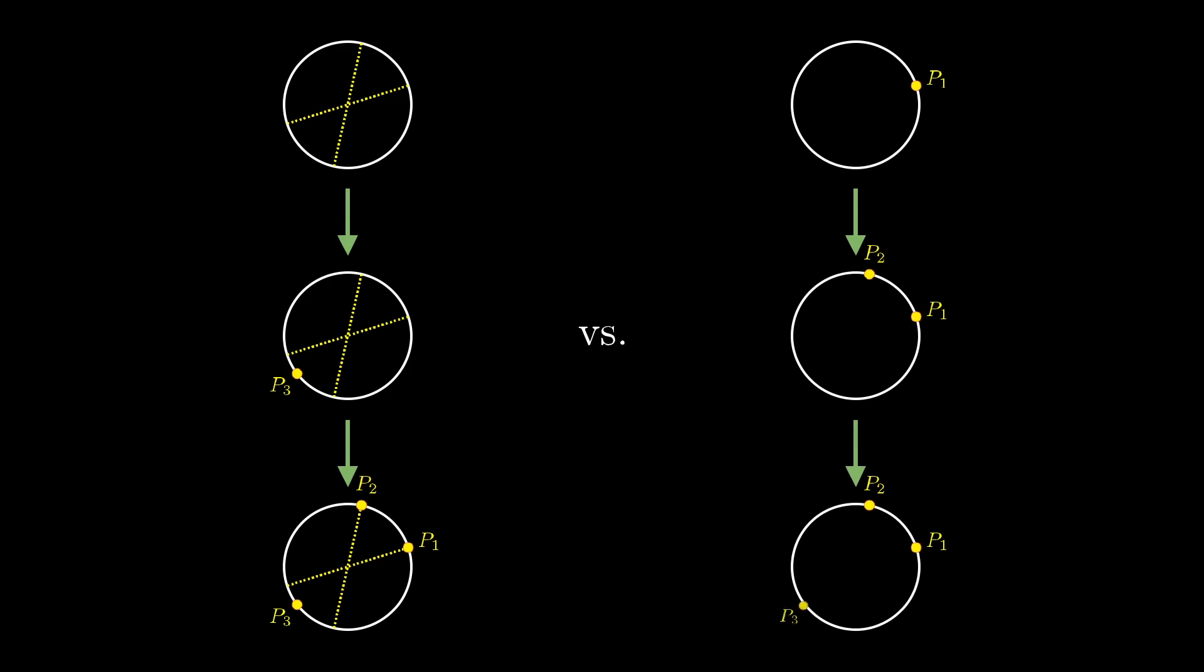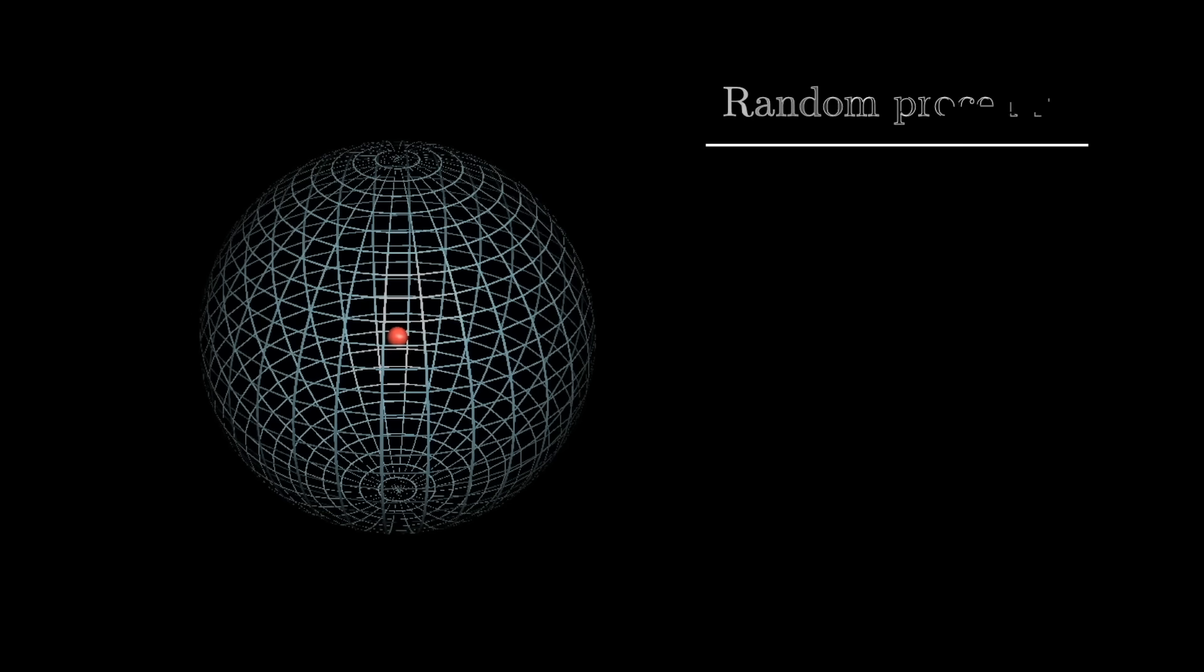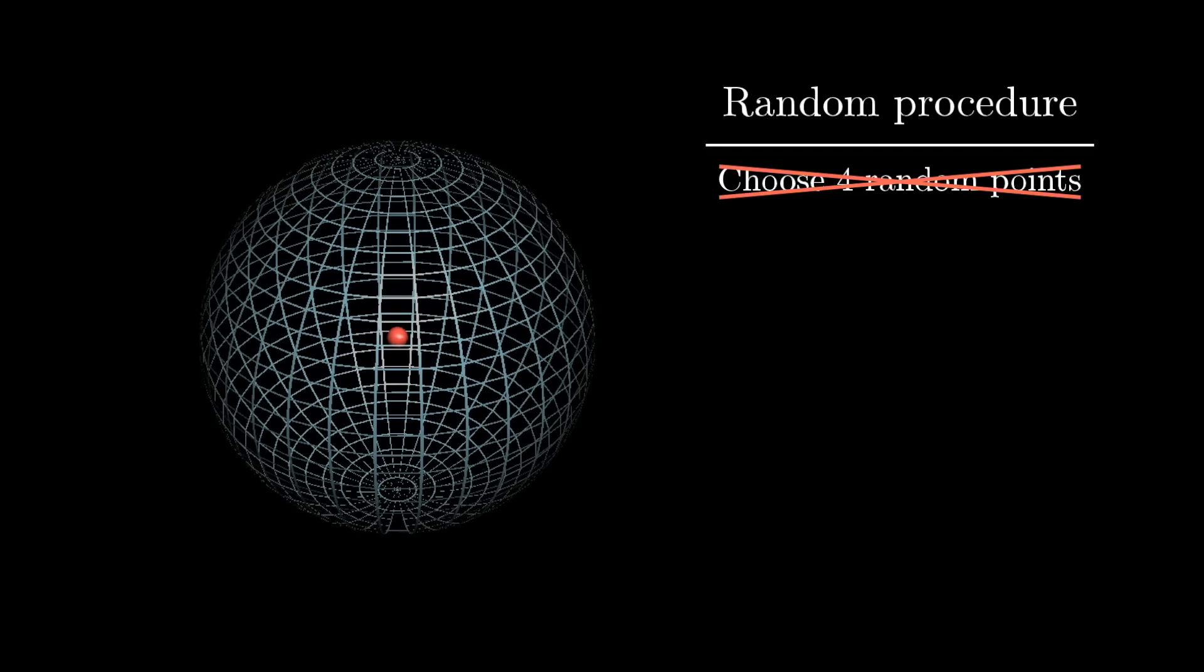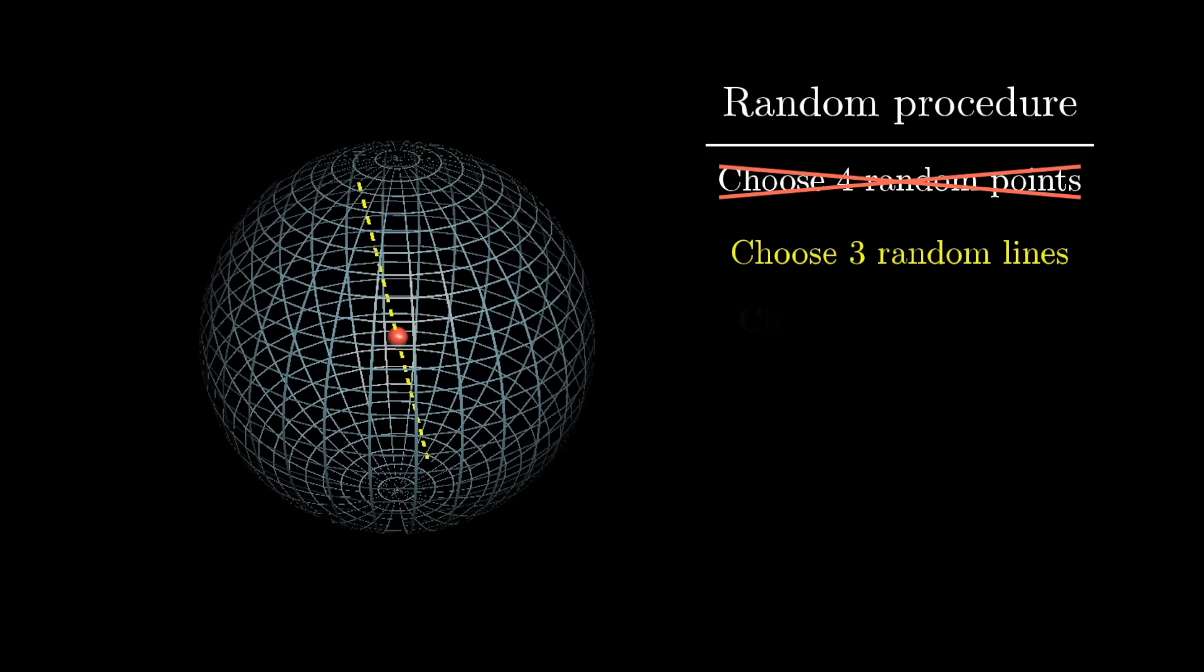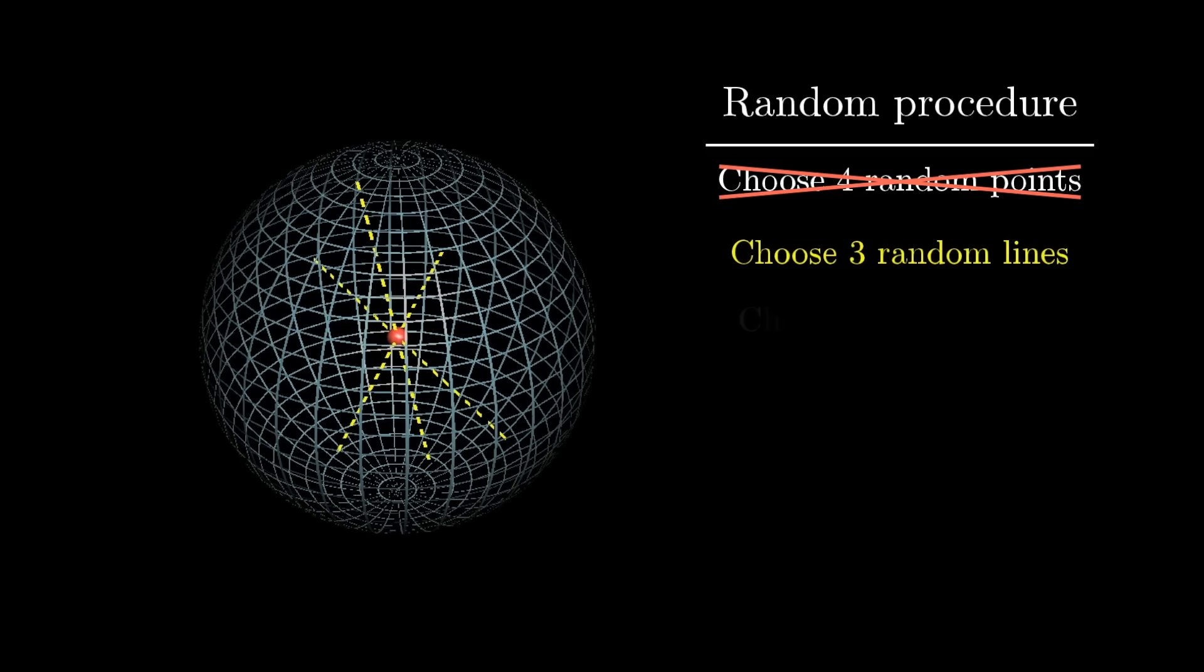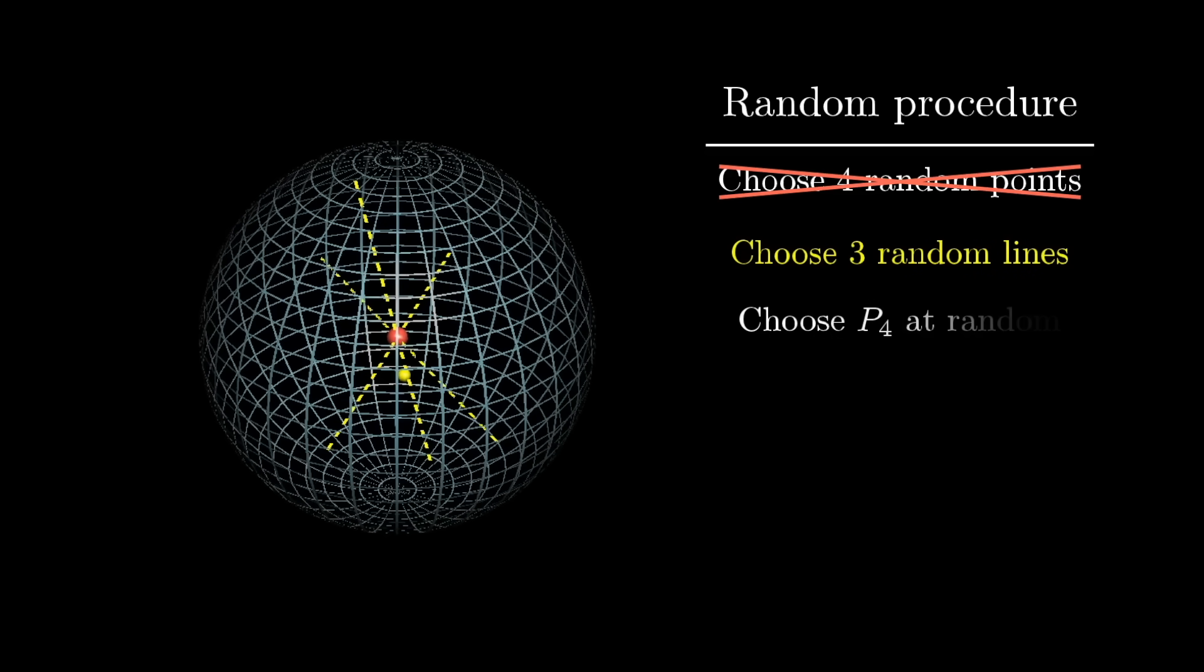And importantly, this style of argument generalizes seamlessly up into three dimensions. Again, instead of starting off by picking four random points, imagine choosing three random lines through the center of the sphere, and then some random point for p4.